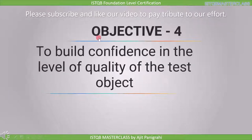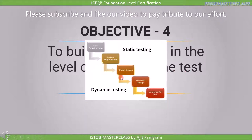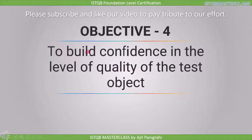The fourth objective is to build confidence in the level of quality of the test object. For example, in the requirement stage, if we clarify all requirements in that stage itself rather than during the implementation stage, we build confidence in our requirement and ultimately in our product. If we find mistakes during the implementation stage, all previous documents require change, which is a costly process — that is why it is necessary to build confidence in the level of quality of the test object.